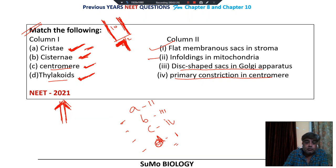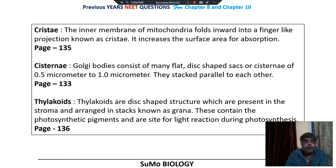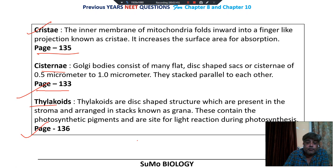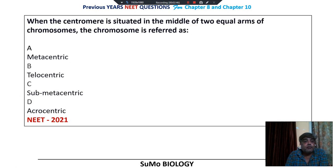This is a question from NEET 2021. Cristae are described on page number 135, Cisternae on page number 133, and Thylakoids on page number 136. Move to the next slide.